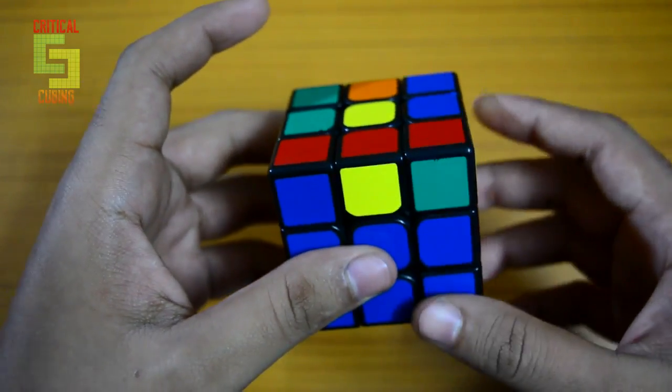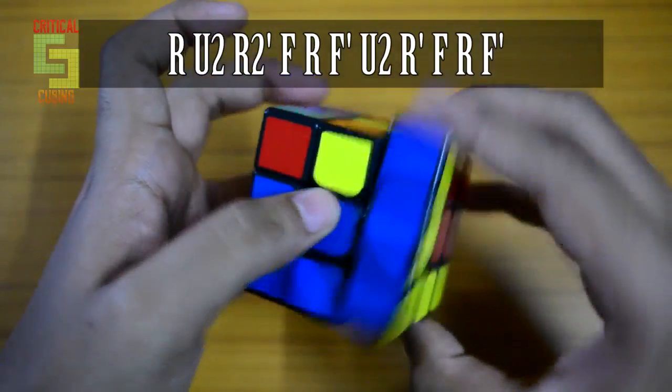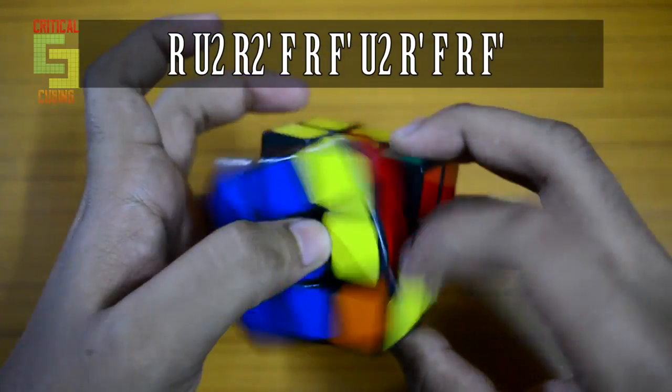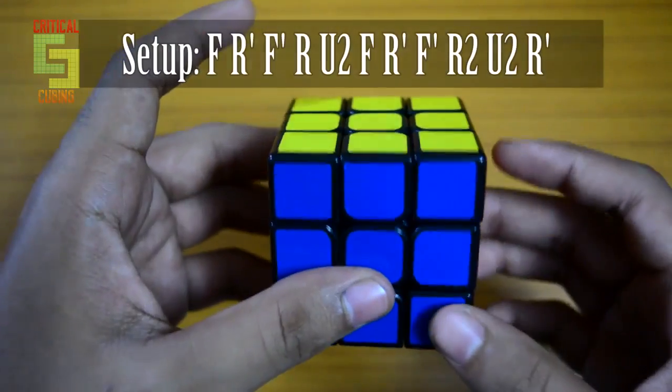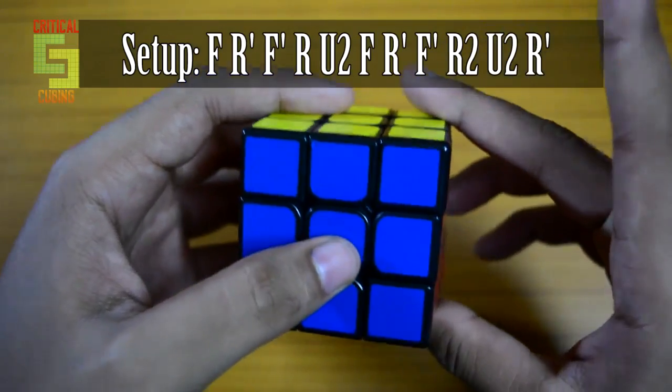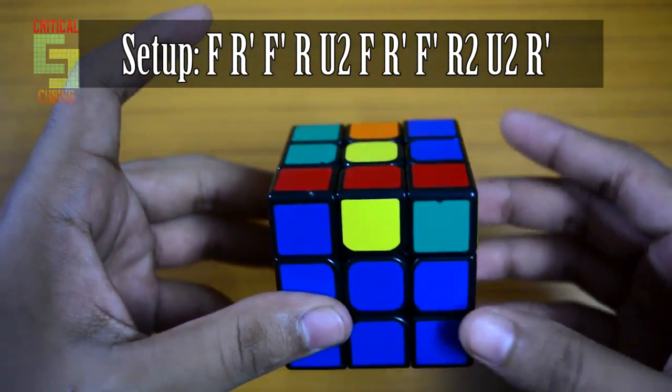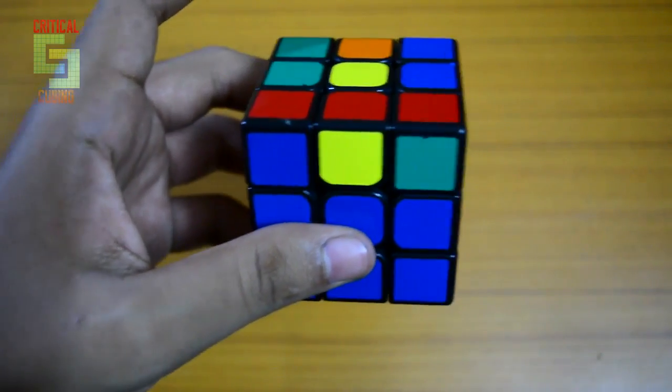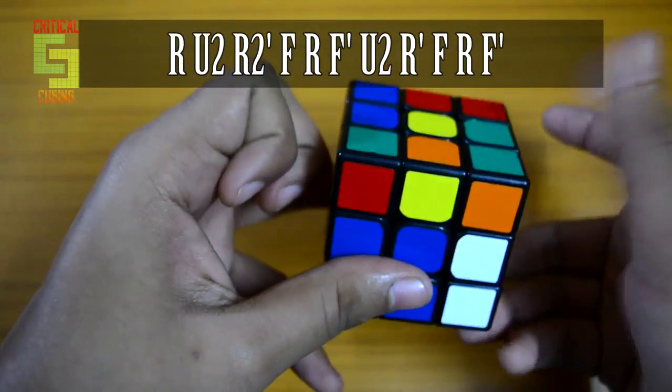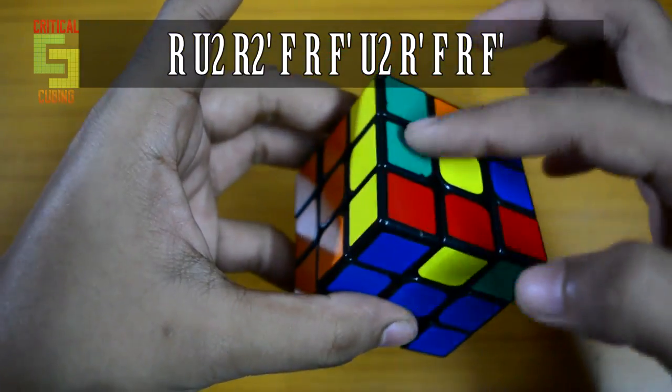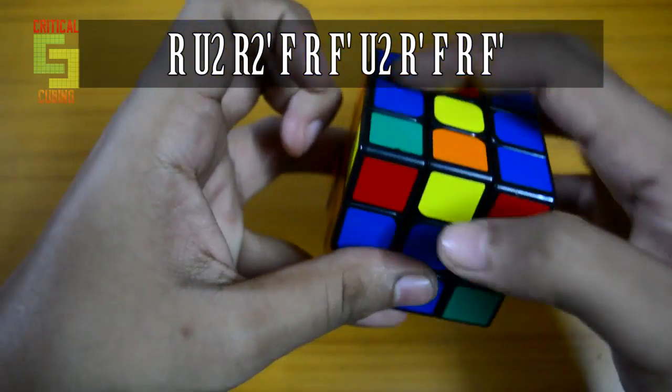So how do you solve this? You use this algorithm. And for setting up this OLL, you can set it up like this. Let's break this algorithm down a bit. You start by doing an R U2 R', so you are just taking this F2L pair out and putting it at the back slot.